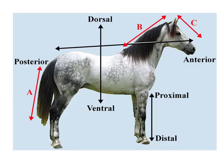There are different directional terms: anterior, posterior, proximal, ventral, and dorsal. If you consider your body, your face is your anterior part and your tail or back is your posterior. Your belly is ventral and your backbone is dorsal. Your arm attachment at the shoulder is proximal and your wrist is your distal part.